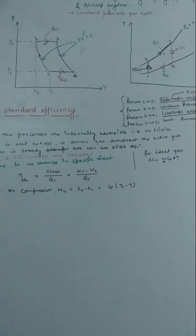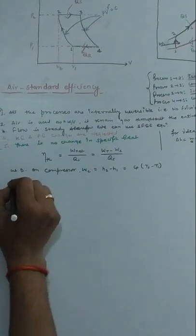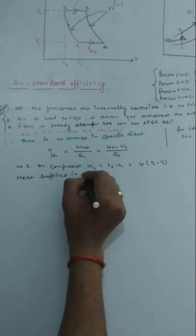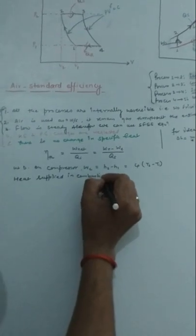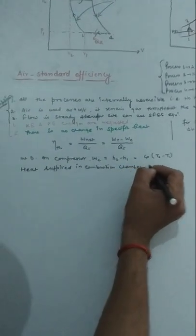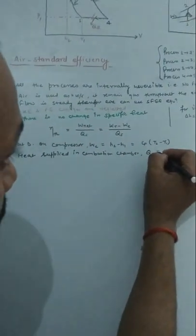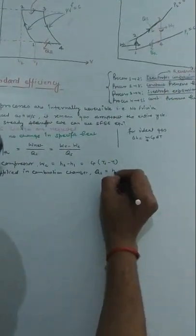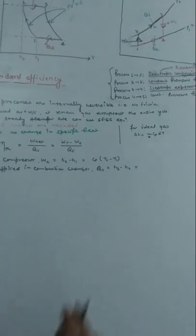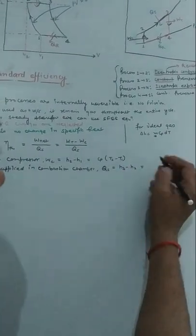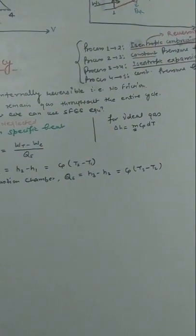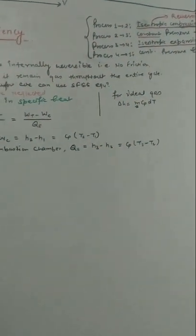Process 2 to 3 occurs in the combustion chamber, where heat is supplied. The heat supplied in the combustion chamber is Q_s = H3 - H2, which can be written in terms of specific heat as Cp(T3 - T2), where T3 and T2 are the temperatures at the respective states.